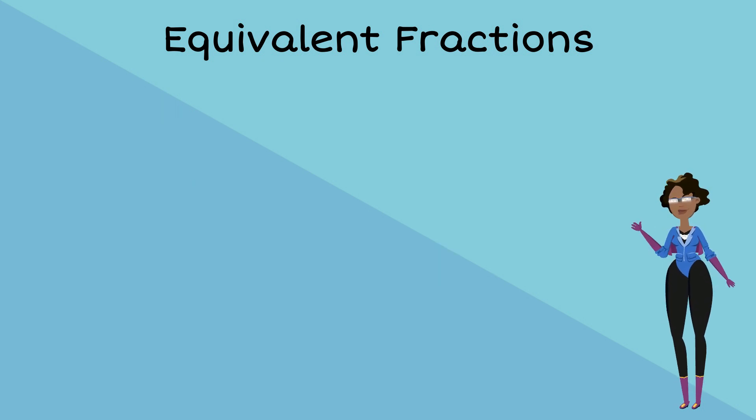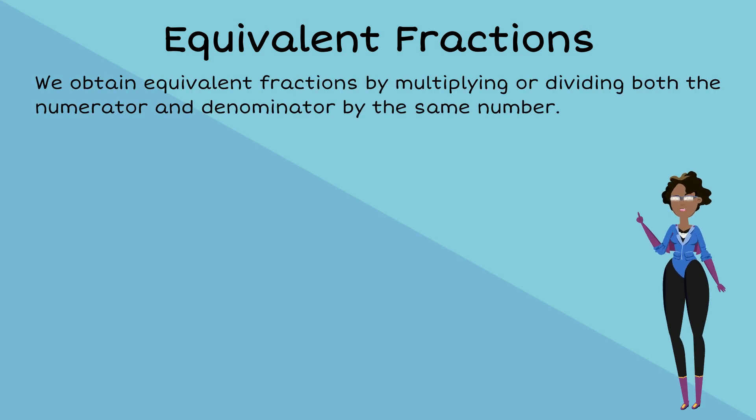Equivalent fractions can be bigger or smaller. We obtain equivalent fractions by either multiplying or dividing both the numerator and denominator by the same number.